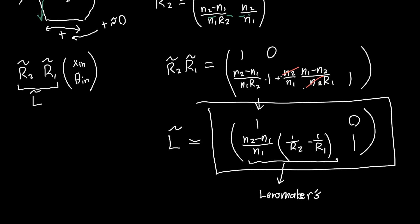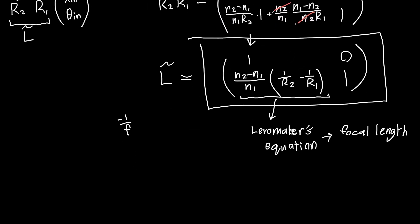This is one way of deriving it—you can use transfer matrices. This quantity inside the transfer matrix is actually minus 1 over the focal length. So we can rewrite the lens transfer matrix as 1, 0, minus 1 over f, 1, where 1 over f you can get from the lens maker's equation equivalently.